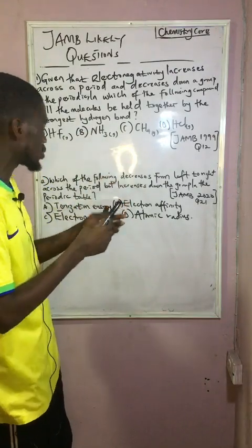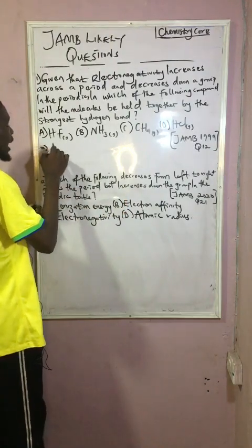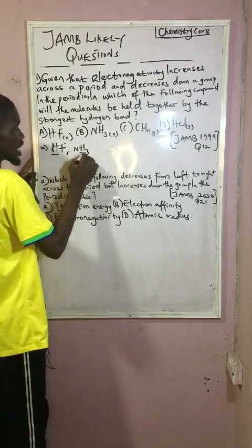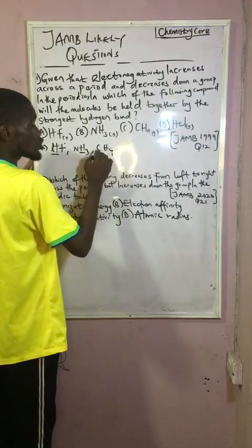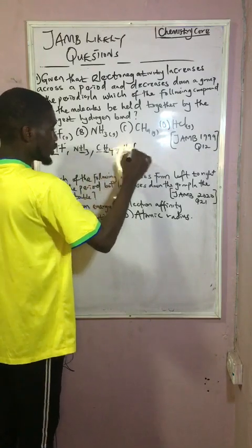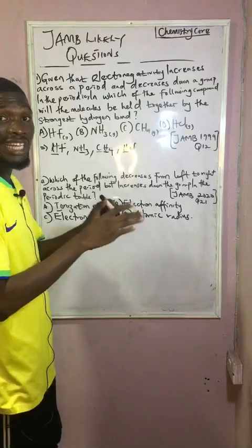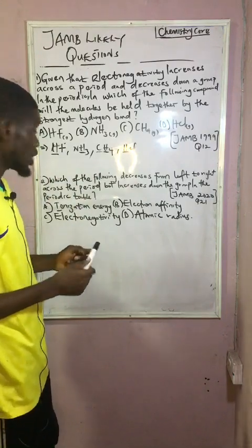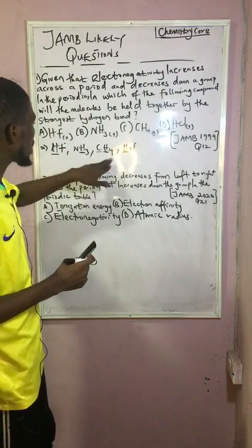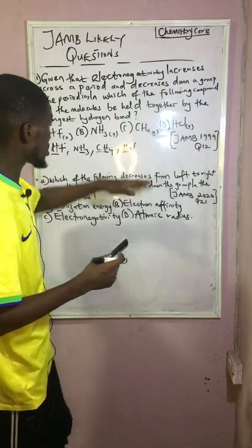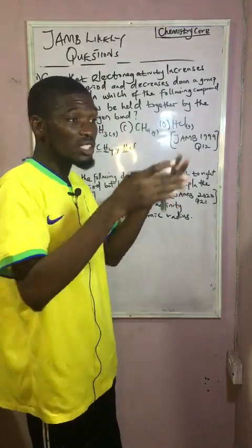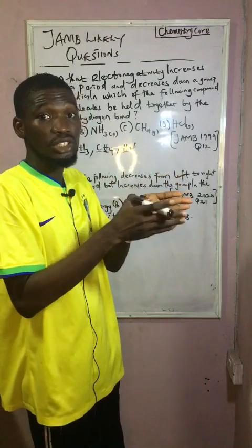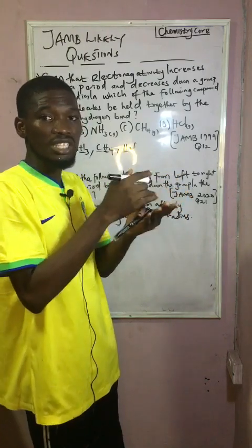We have to look at the molecules which will be held together by the strongest hydrogen bond. The options are: HF (hydrogen fluoride), NH3 (ammonia), CH4 (methane), and HCl. Chlorine is among the electronegative elements. The delta positive and delta negative dipole moment applies here — nitrogen, oxygen, sulfur, and chlorine all qualify as electronegative elements.